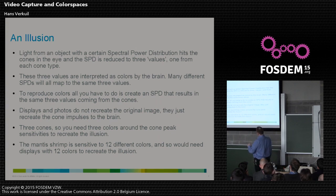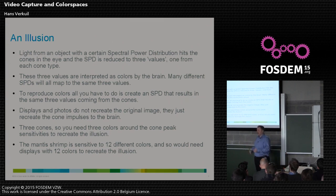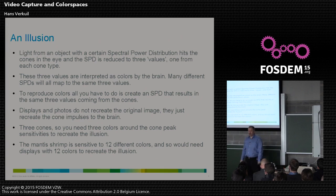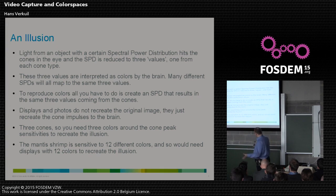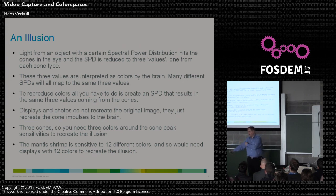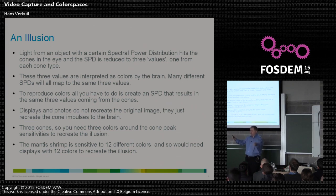These three color receptors are purely biological. Different species can have different numbers of light-sensitive elements. The record holder I found is the mantis shrimp, which is sensitive to 12 different colors — an RGB display wouldn't work for them. They would need a display with 12 different color components to reproduce colors they can see. So the three values, the RGB, come purely from what the human biological eye does.